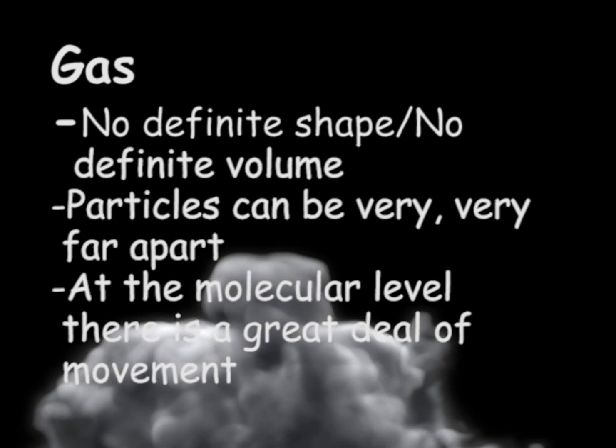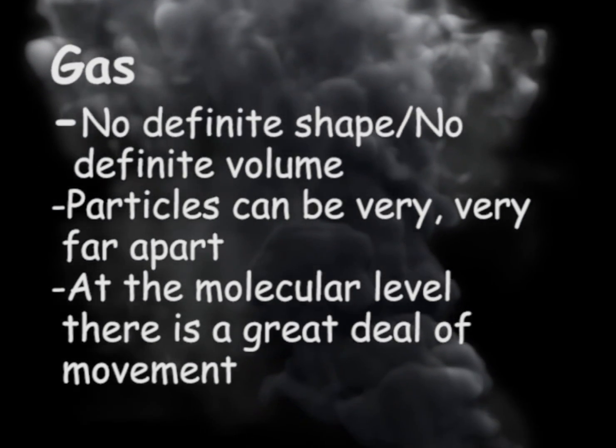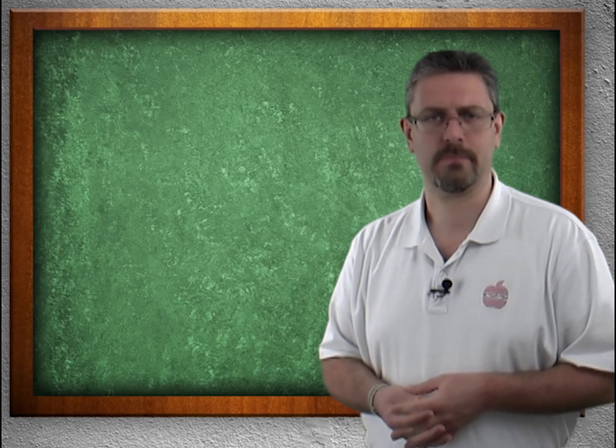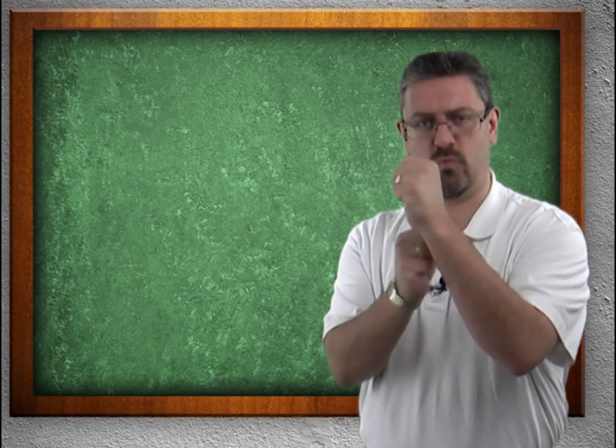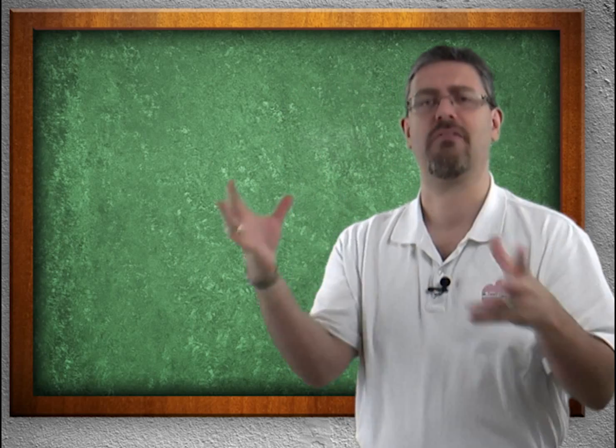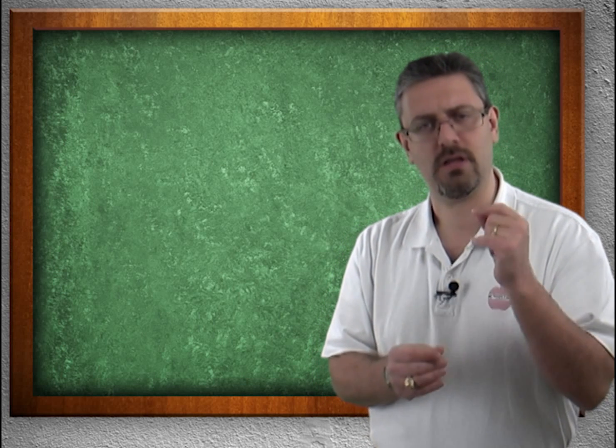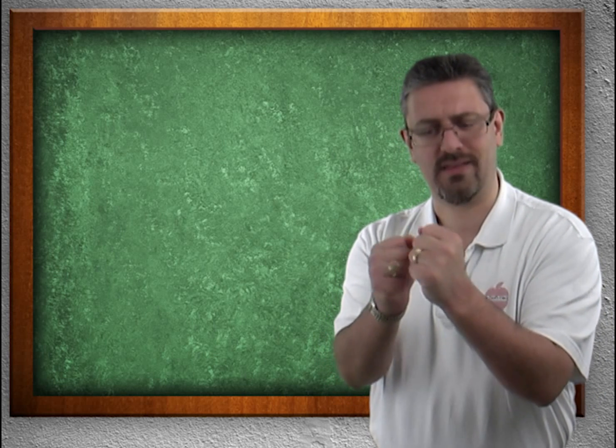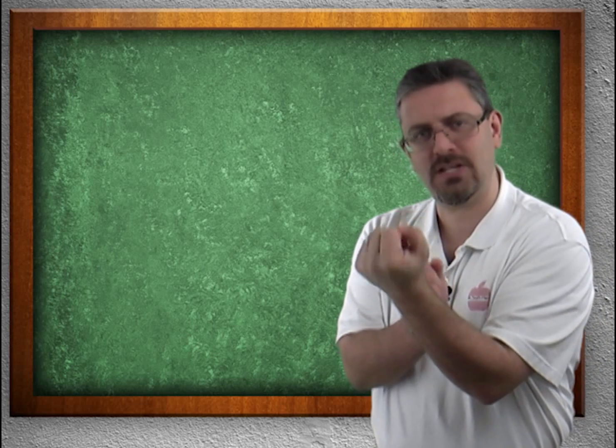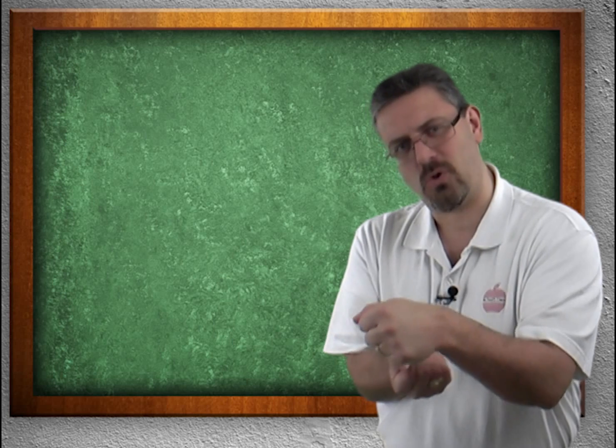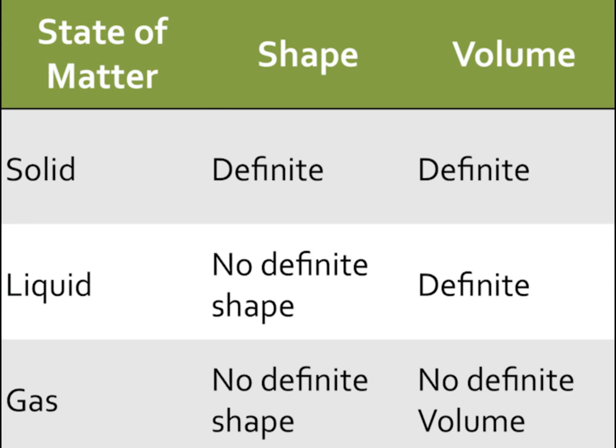Gas has no definite shape and no definite volume. It will assume the volume of whatever container you put it in as well as the shape of whatever container you put it into. At the molecular level, a solid has some movement. A liquid has more movement while a gas is everywhere. That explains why they do what they do. A solid has definite shape, definite volume because the molecules aren't moving that much. A liquid has more movement so it's able to change its shape, but the volume still holds tight. A gas, all bets are off. They're everywhere.